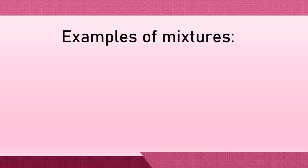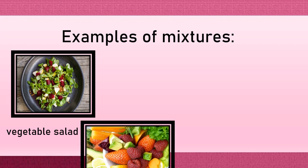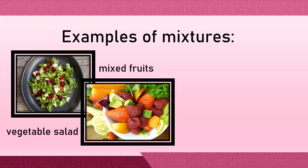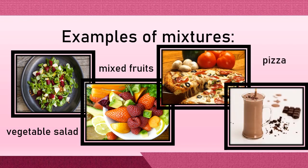So here are the examples of mixtures. Vegetable salad, a combination of different kinds of vegetables. Mixed fruits, a combination of different kinds of fruits. Pizza, a combination of different kinds of ingredients such as flour, cheese, pepperoni, and other kinds of ingredients. And a chocolate smoothie, a combination of milk, chocolate, sugar, and ice.